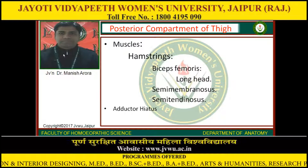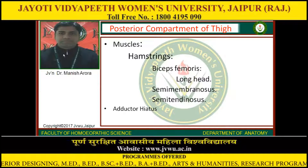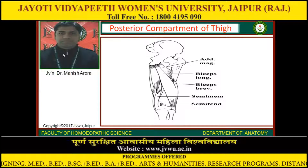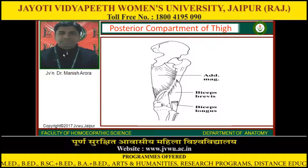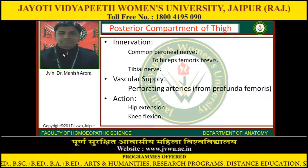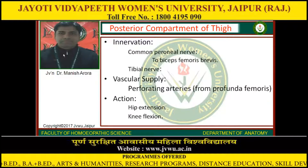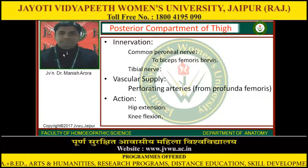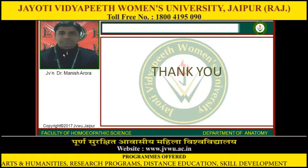Posterior compartment of the thigh — muscles: Hamstring muscles, including Biceps Femoris long head, Semimembranosus, and Semitendinosus, and the adductor hiatus. Innervation: Common Peroneal Nerve to Biceps Femoris brevis, and Tibial Nerve. Vascular supply: perforating arteries from Profunda Femoris. Action: hip extension and knee flexion. Thank you.